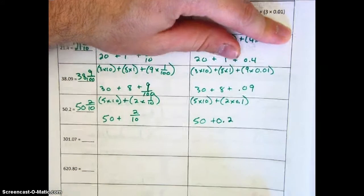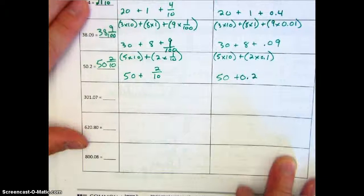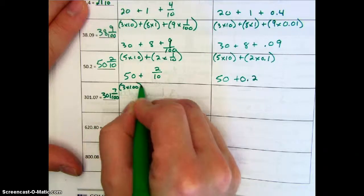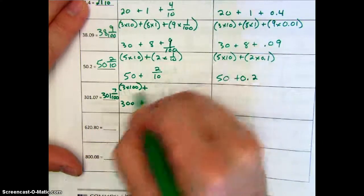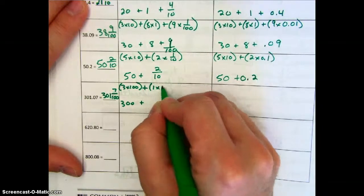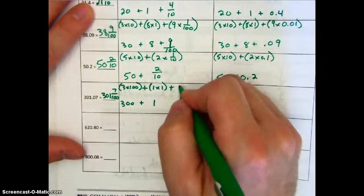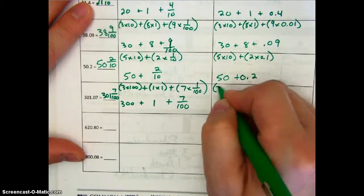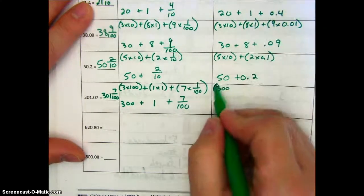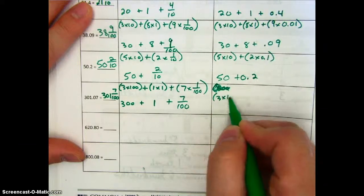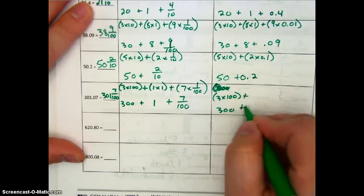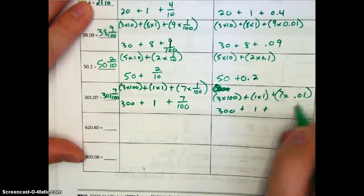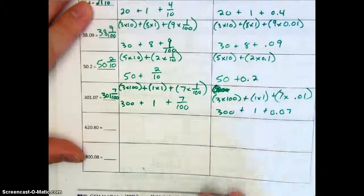Now our numbers are going to start getting a little bit larger. We have three hundred one and seven hundredths. Start off with three times one hundred to get us our three hundred. Then, skipping over the tens place, go right to the ones place — we have one times one. Skipping the tenths place, now we have seven times one one-hundredth. Moving on to decimal form: three times one hundred, plus one times one, plus seven times one hundredth.